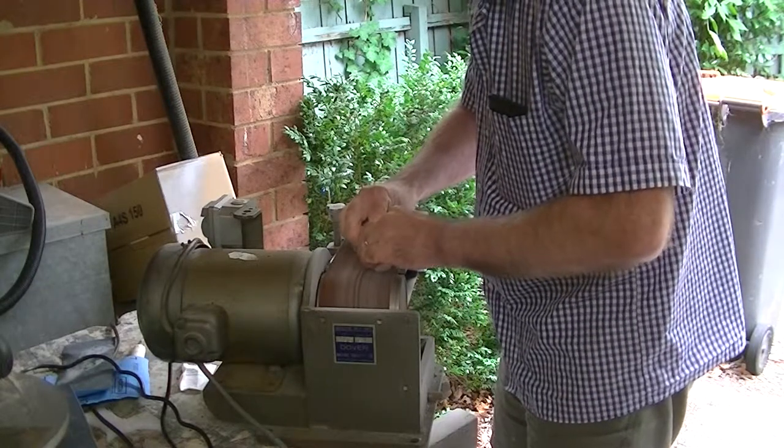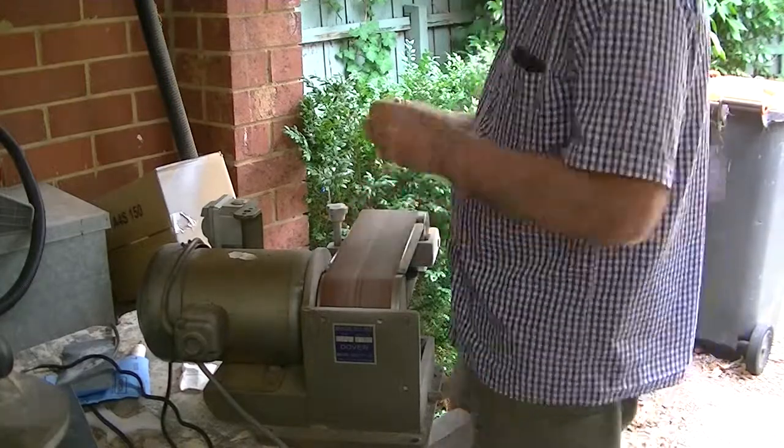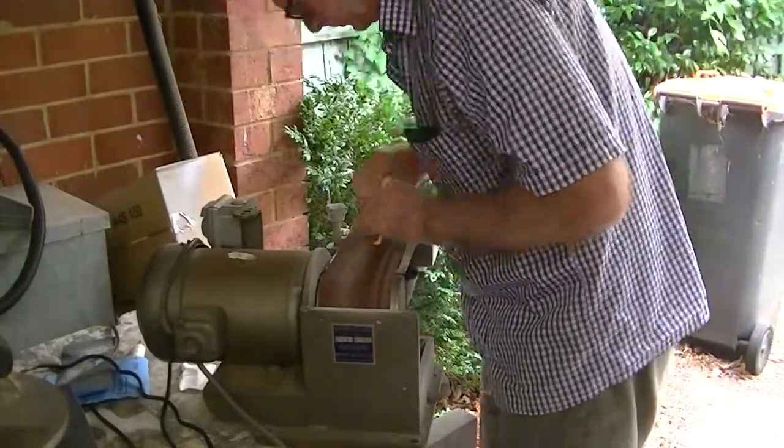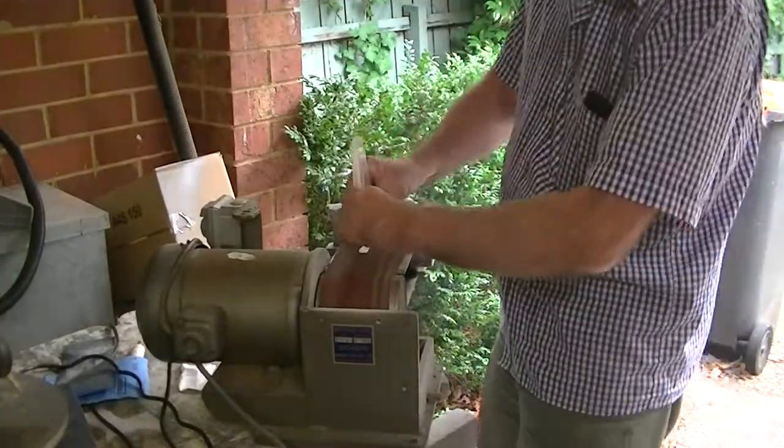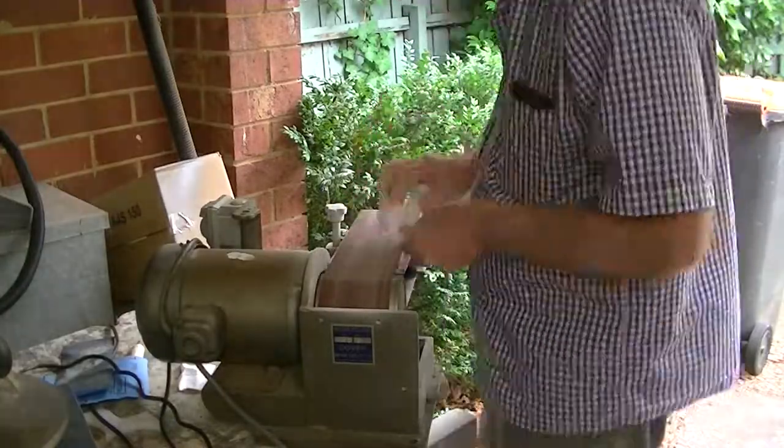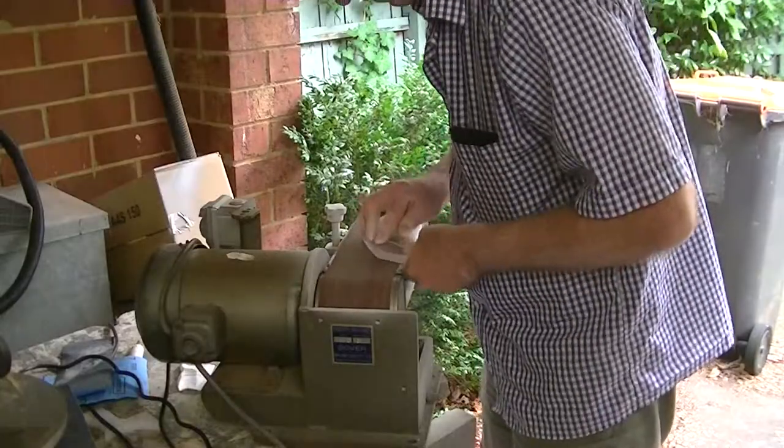And then obviously shave them down endwise to get the shape of the hydroplane. Now I'm starting the really fun part of grinding into this, what is now a 12mm piece of Perspex, the aerofoil shape that's required for these hydroplanes. A great belt sander like this is really worth it, it's just fantastic.